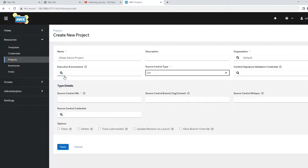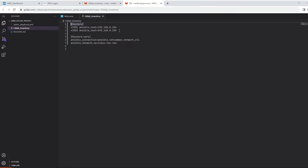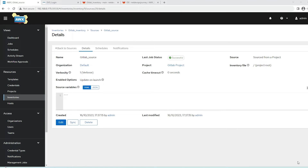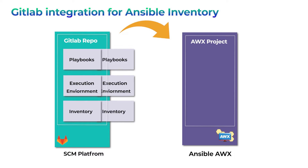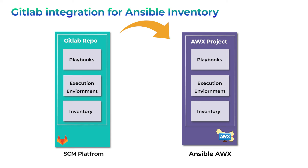This video is an extension of that previous video, where I will demonstrate how to create an inventory on GitLab first and show the important steps required on the AWX dashboard to import the inventory details. This is helpful so we can maintain a repository on GitLab or any other SCM platform and have it imported to AWX containing the playbook and inventory details. Let's see them in action.